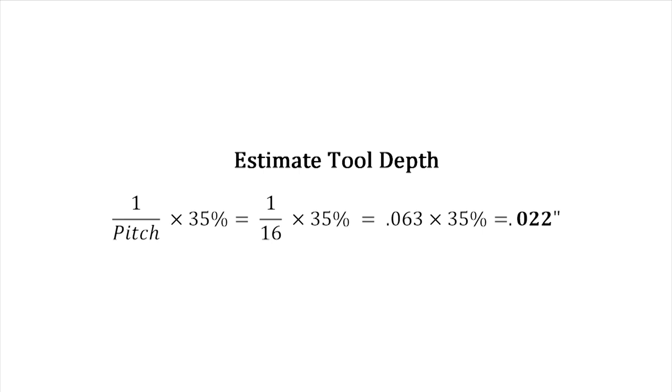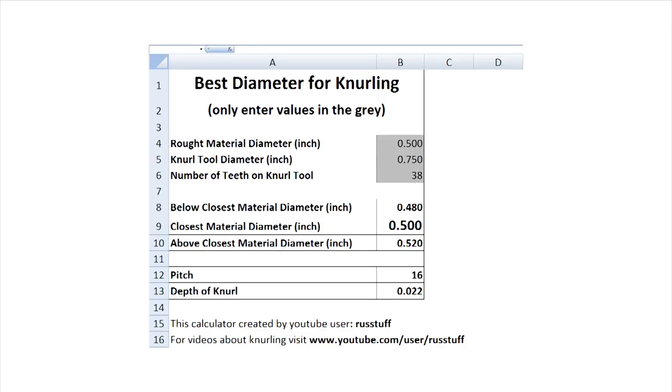Two diagonal tooth rollers make a diamond pattern, but there are some rollers that have a diamond pattern in each roller. If that's your application, then 35 percent is not correct, and you'll need to consult the Dorian catalog for that number. But as long as you're using straight or diagonal, you'll be good to go.